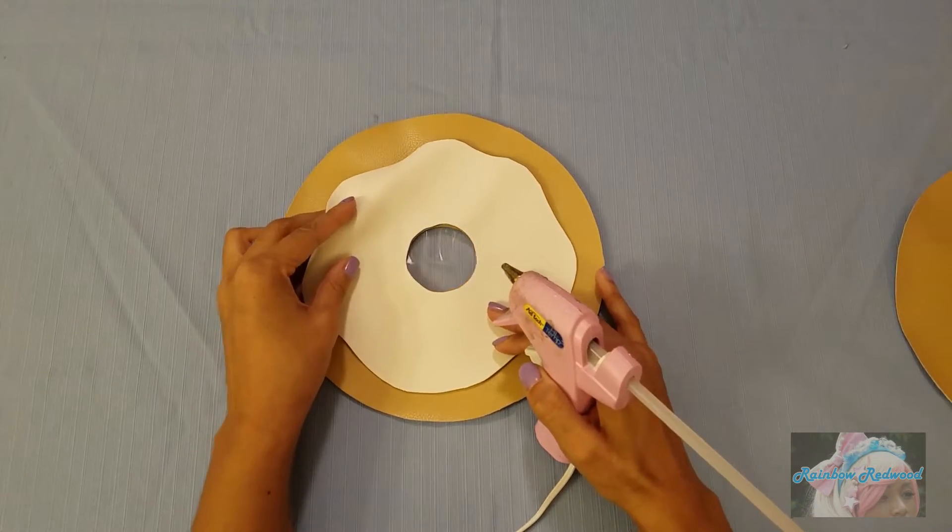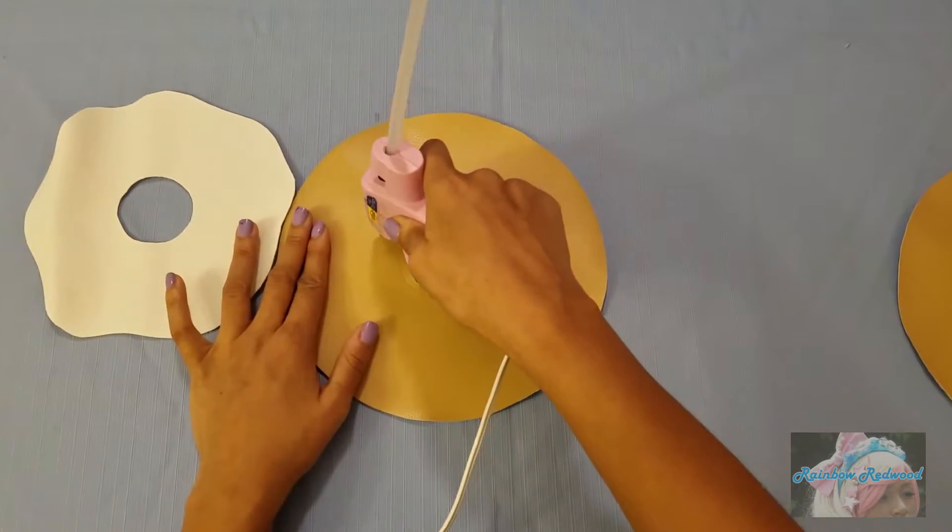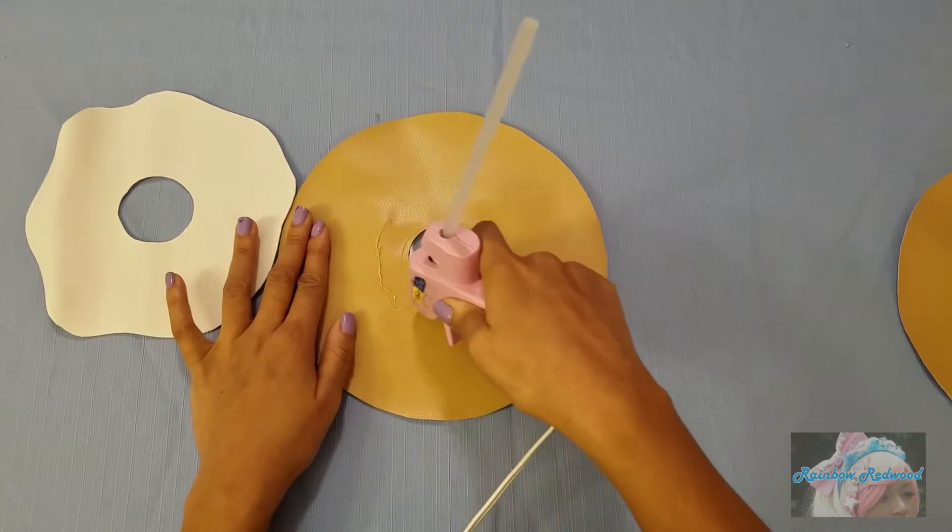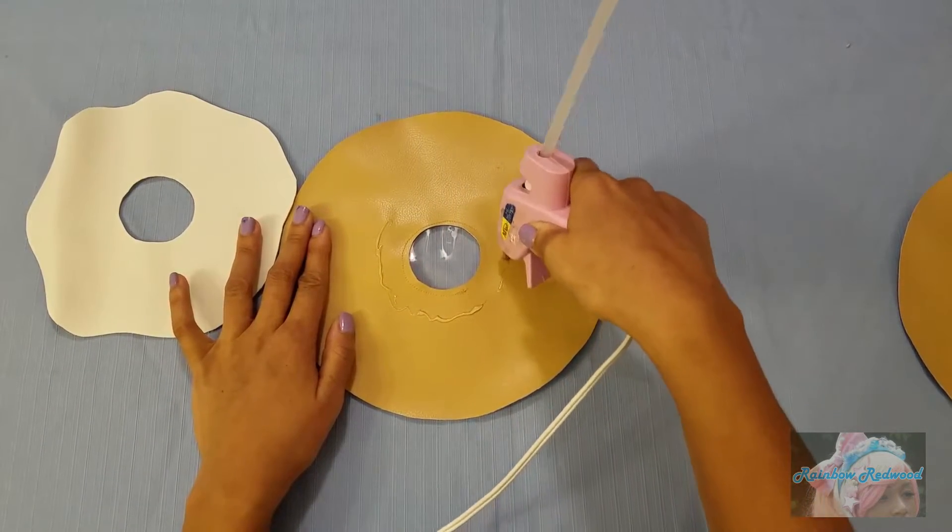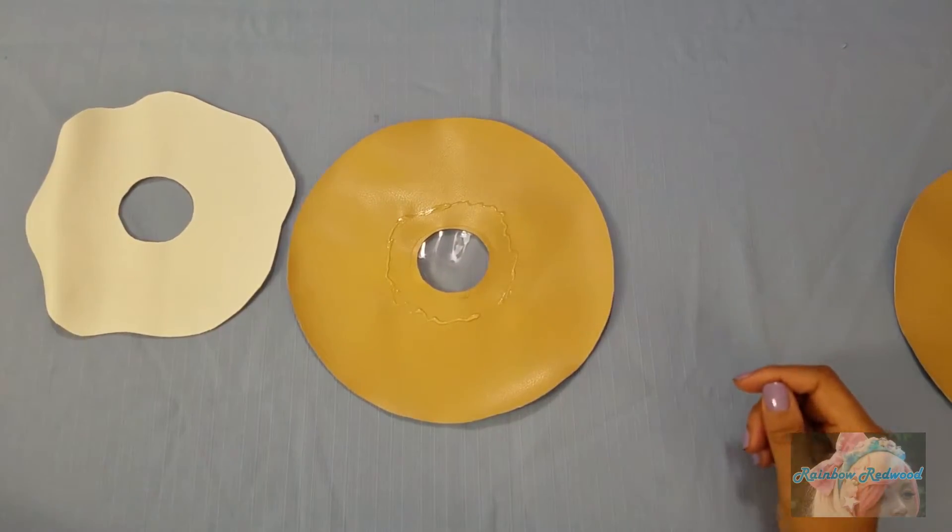To keep the frosting in place while I sew it, I like to put some hot glue down and make sure you stay away from the center so you don't sew through the hot glue. You also don't want to go too far out on the edge because you'll be sewing the edge down as well.